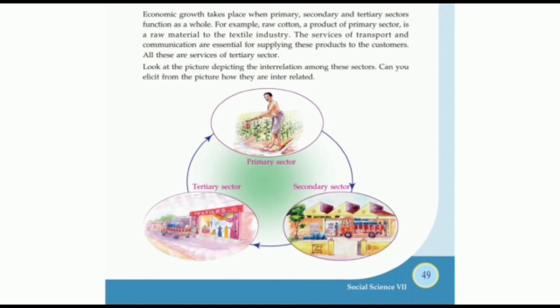After cultivation, we use the cotton to weave cloths. We use the materials to weave the cloths, so this is included in the secondary sector. We get cloths from the secondary sector, then we transport them to textiles. The way of transportation is considered the tertiary sector.